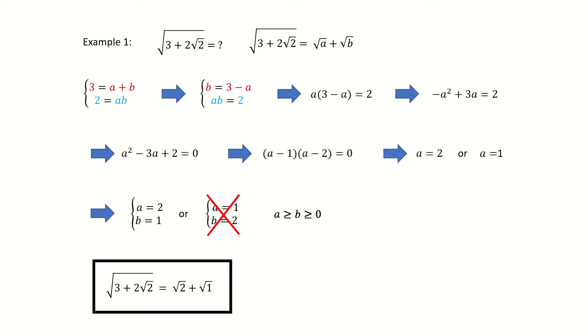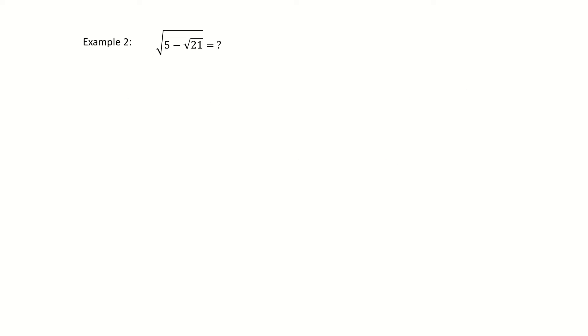So please keep watching. Let's see example 2. We set the right-hand side to be square root a minus square root b. Because the expression inside the square root is minus sign. Again, we require the same condition here. a is greater or equal to b. Then we square them on both sides.